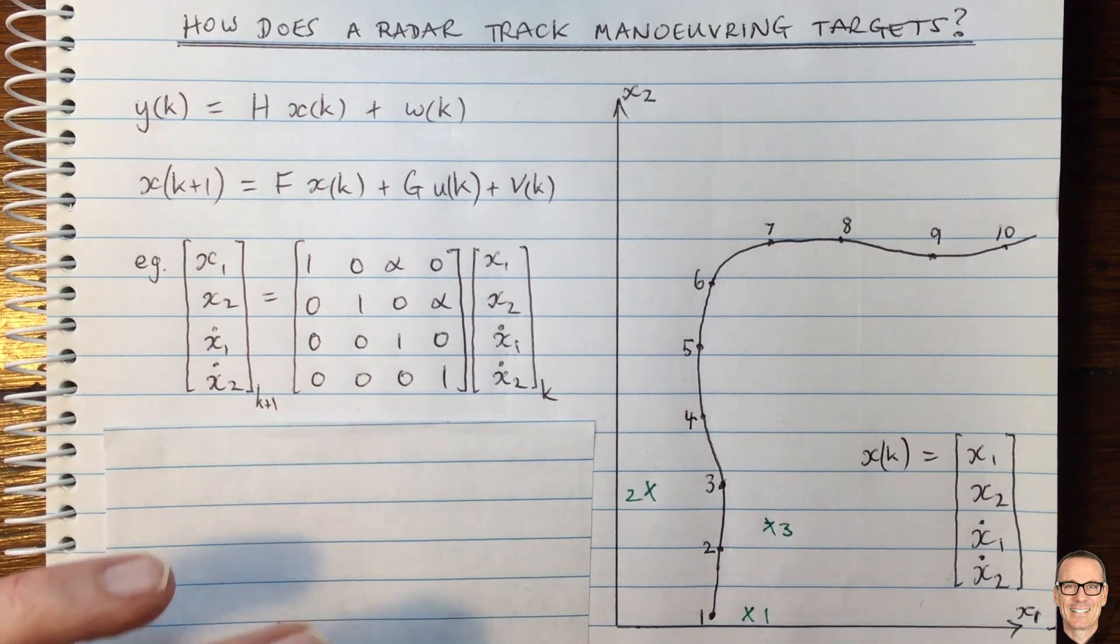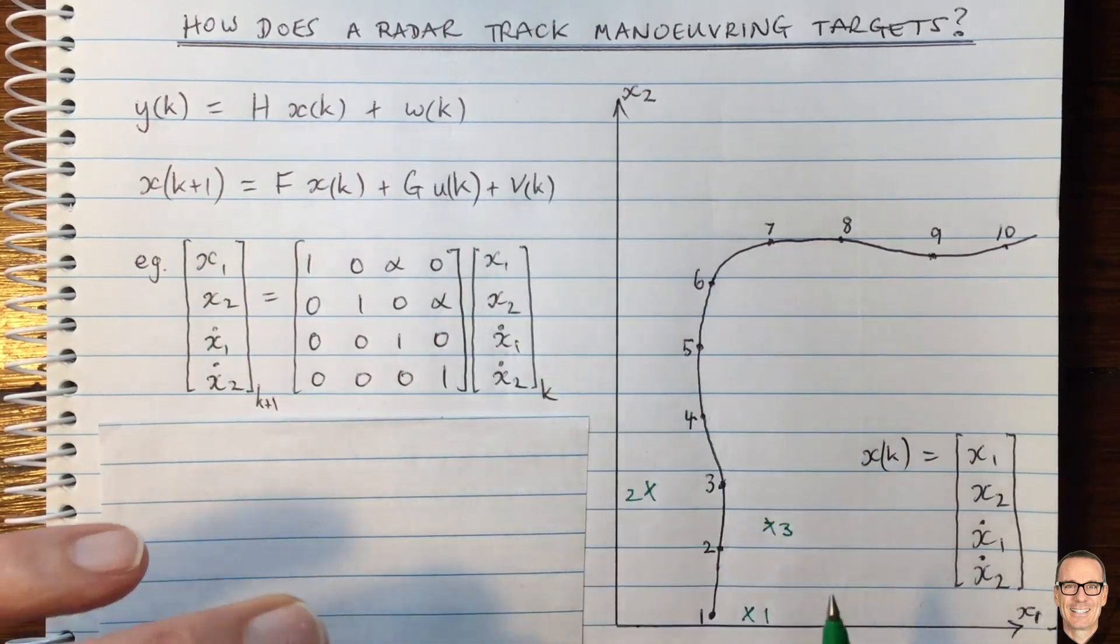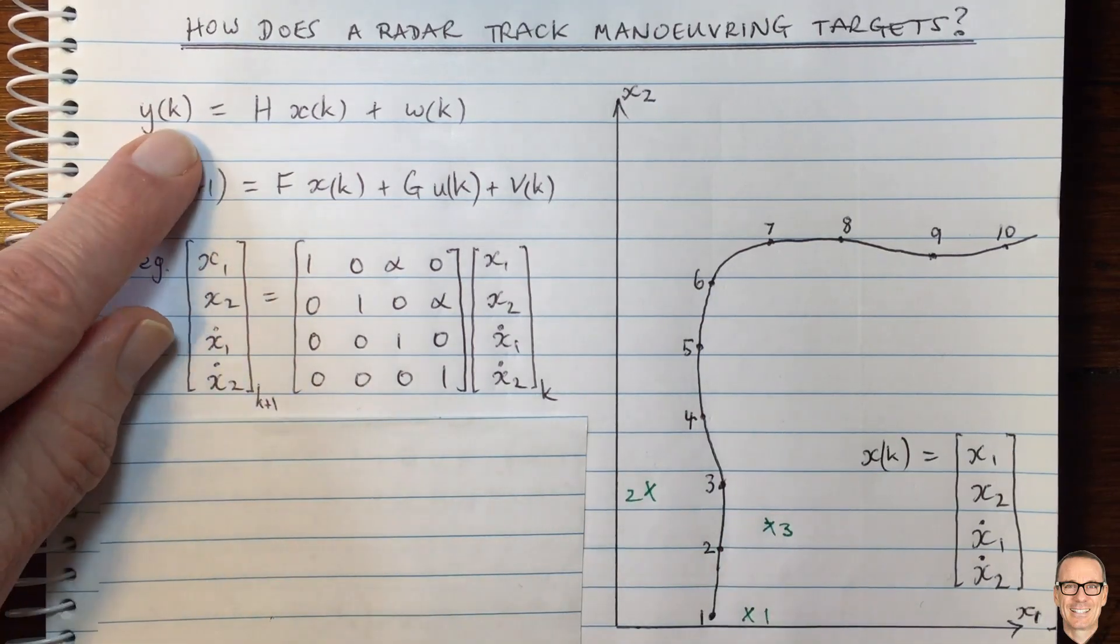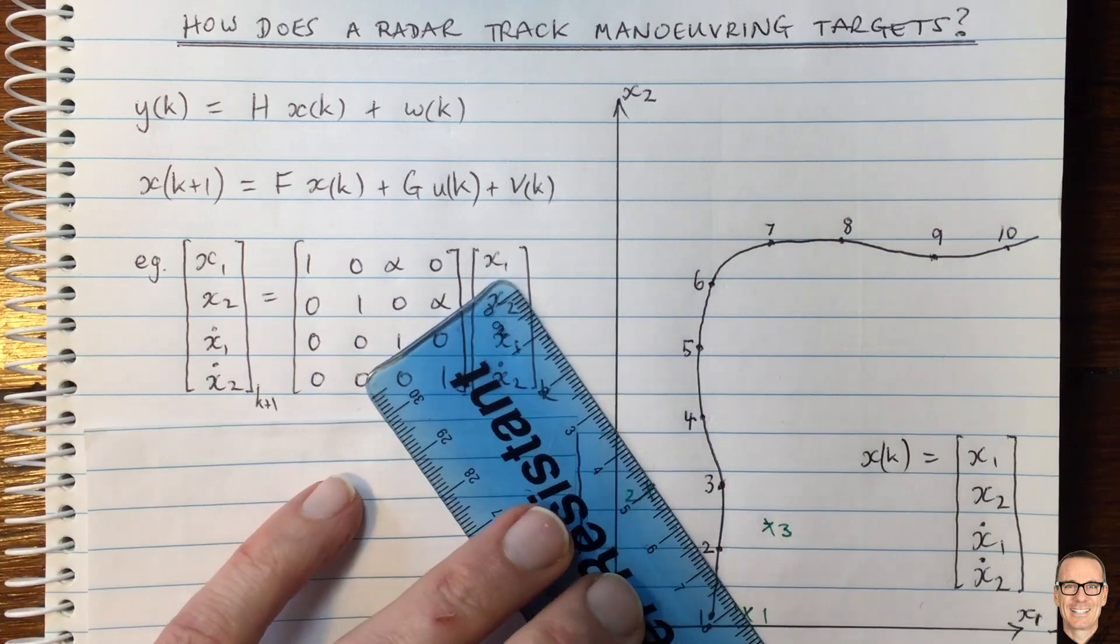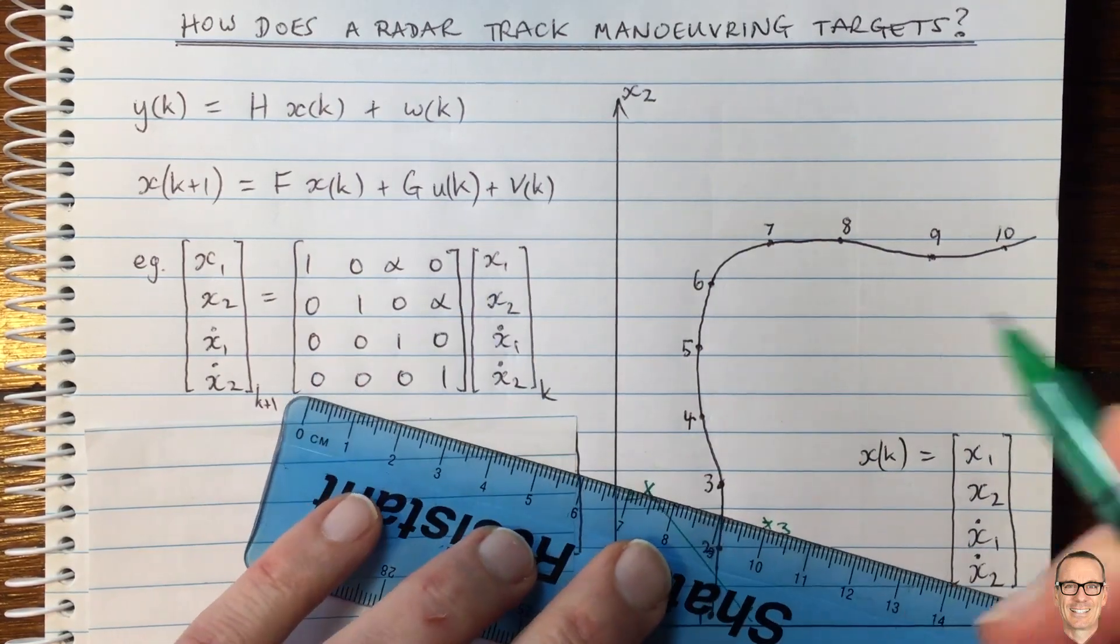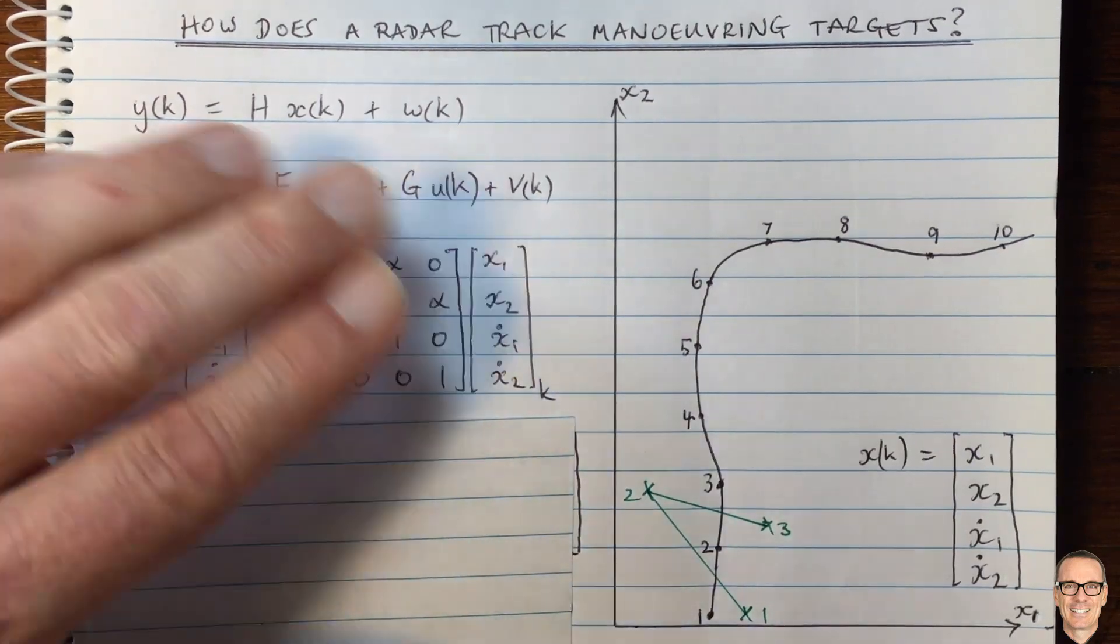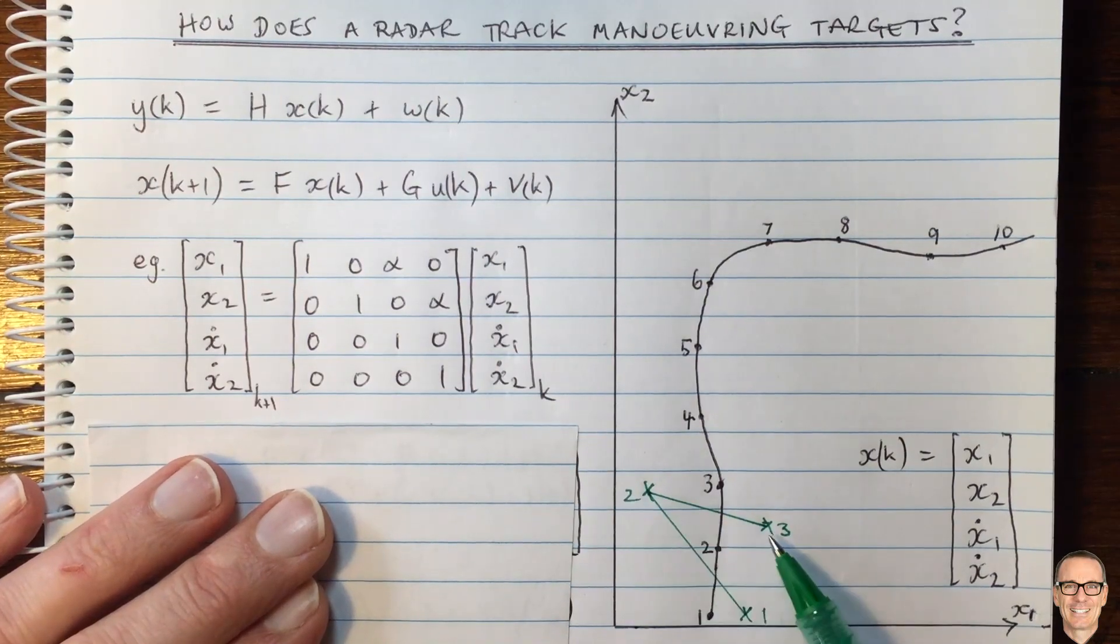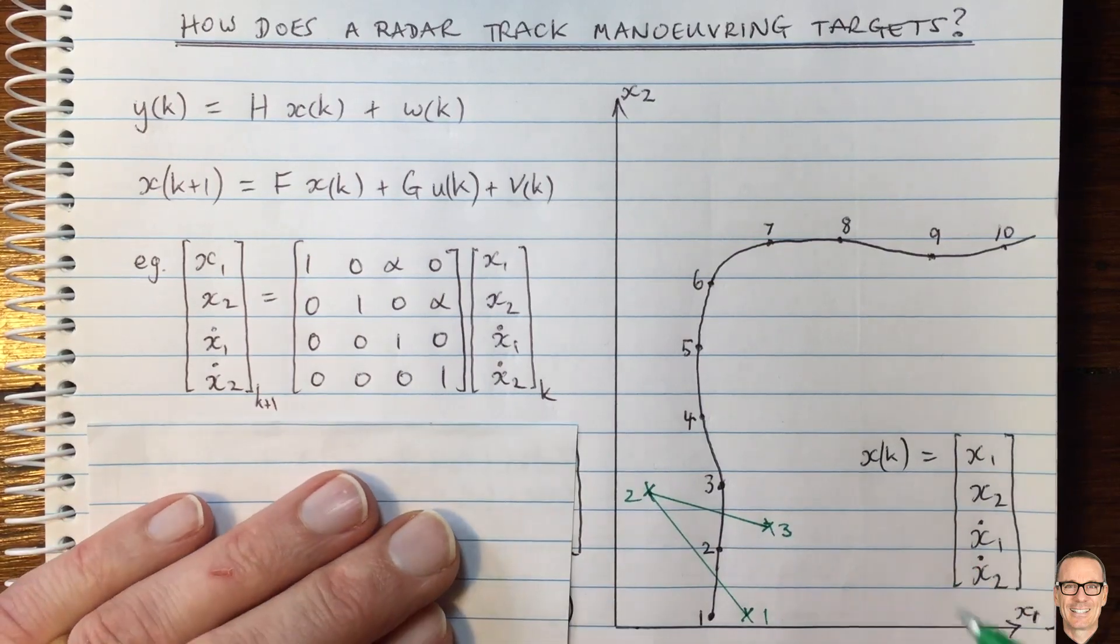Then what we could see is that if we didn't include the filtering and this model here, if all we did to estimate the location was to simply look at the locations where our measurements are, then we would have a path where we would think that our target had gone on this path here. So it would be quite a noisy looking path.